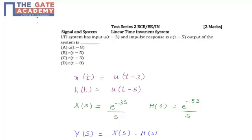The question is: an LTI system has input u(t-3) and impulse response u(t-5). The output of the system is: option A is u(t-8), option B is r(t-5), option C is r(t-3), and option D is r(t-8).